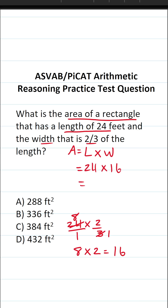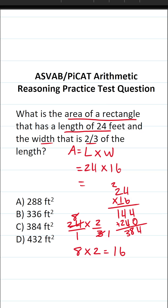On test day, you really don't want to make mistakes, so I'd recommend you do 24 times 16 off to the side. 4 times 6 is 24, so we'll bring down a 4 and carry a 2. 6 times 2 is 12, plus 2 is 14. Before we start multiplication with this 1, we have to bring in a zero placeholder. 1 times 4 is 4, and 1 times 2 is 2. Adding it all up gives us 384. So the area of this rectangle is 384 square feet, which is answer choice C.